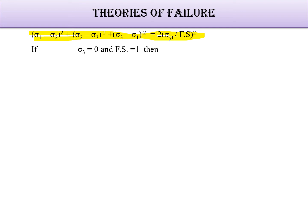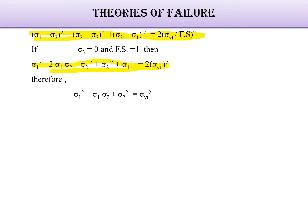Substituting σ3 = 0 and FOS = 1, we get terms: −σ1², σ2², and (σ1 − σ2)². After resolving, we obtain: σ1² − σ1·σ2 + σ2² = σ_yt². The factor of 2 cancels out in the process, leaving only this simplified term equal to σ_yt².